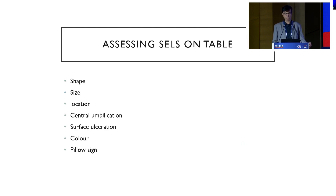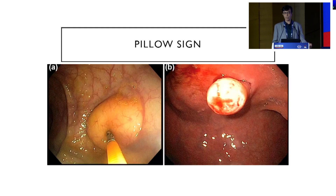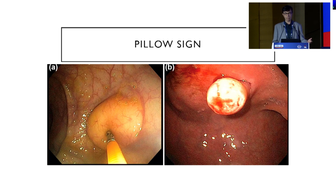On the table, you assess the shape, size, location, central umbilication, surface ulceration, color, and pillow sign. The pillow sign is characteristic of a lipoma — if you have an SEL with a yellow hue and you press a closed biopsy forcep, it gives an impression like your head pressing on a pillow. You can also denude the mucosa and see the yellow tissue inside.